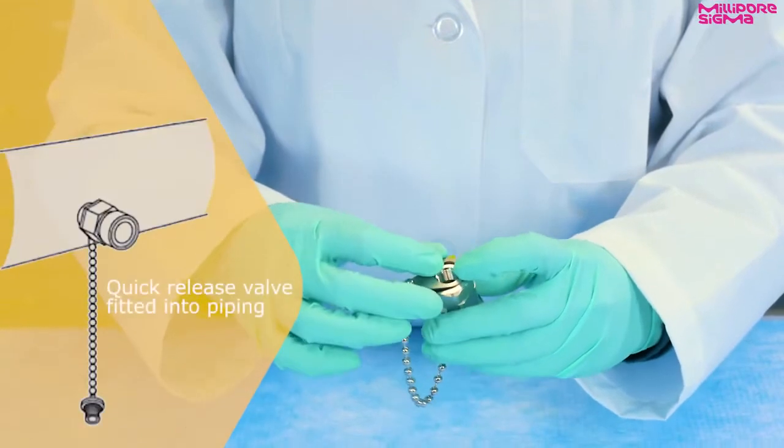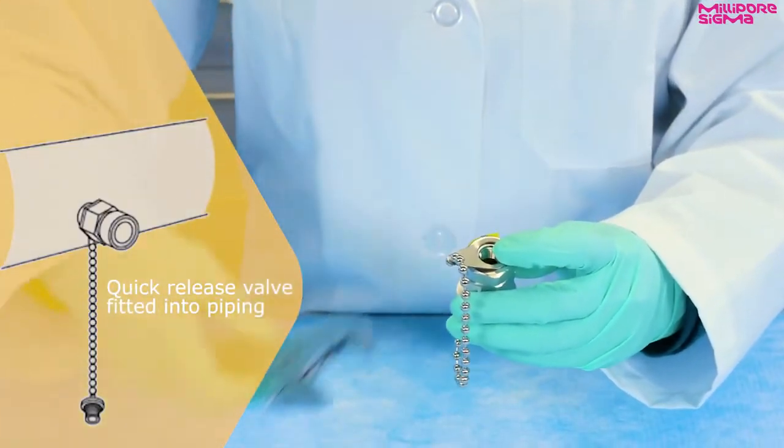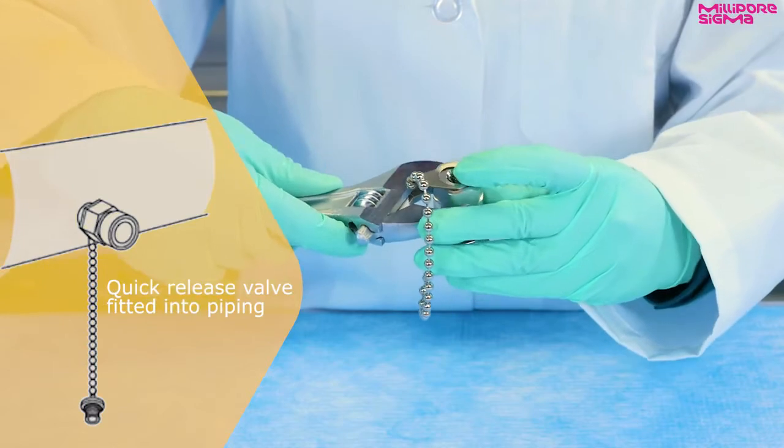Attach the quick-release valve into your system using an adjustable wrench if needed. Inlet pressure should not exceed 100 psi.